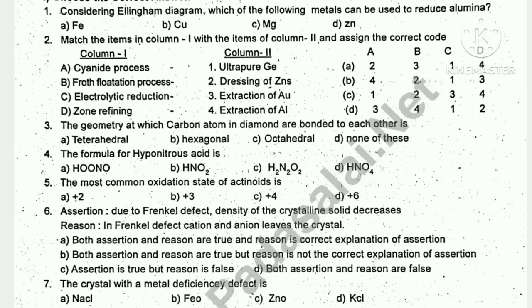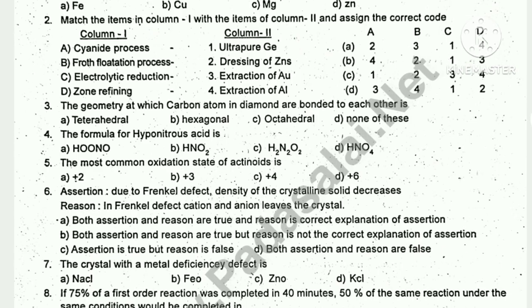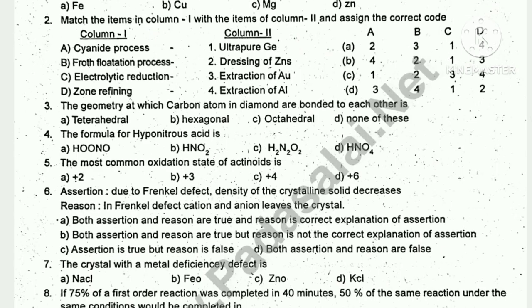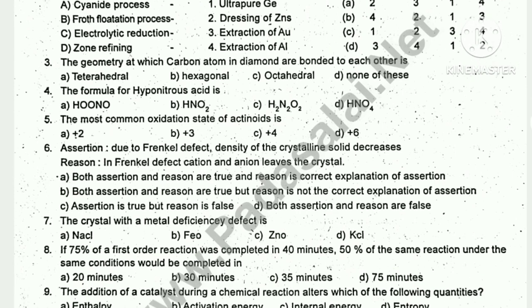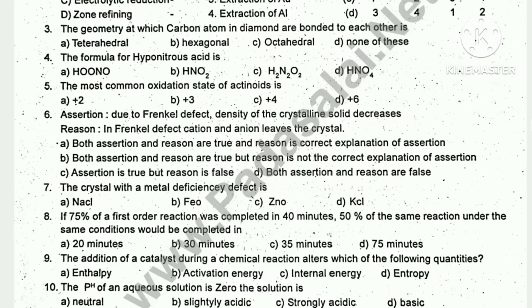Considering the diagram, the following metals can be used to reduce alumina. The geometry at which carbon atoms in diamond are bonded to each other. The formula of hyponitrous acid. The most common oxidation state of actinoids.